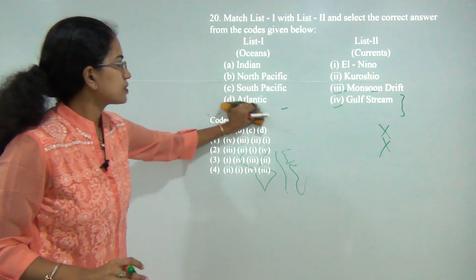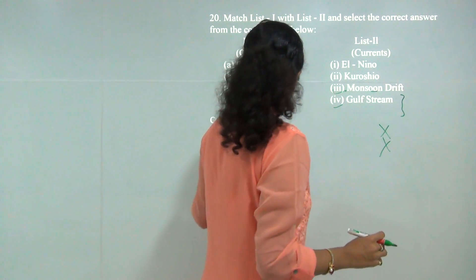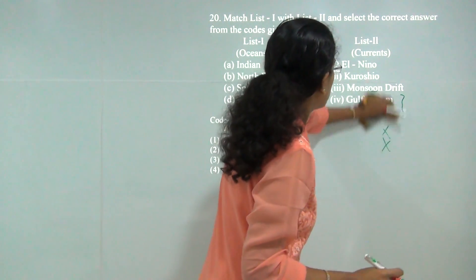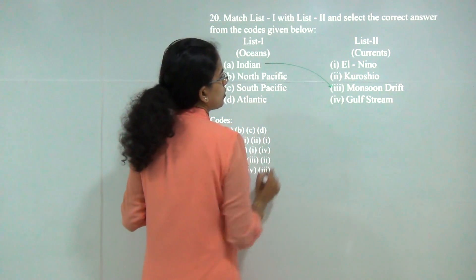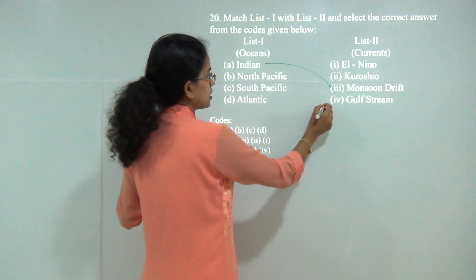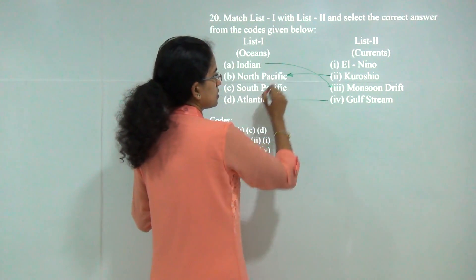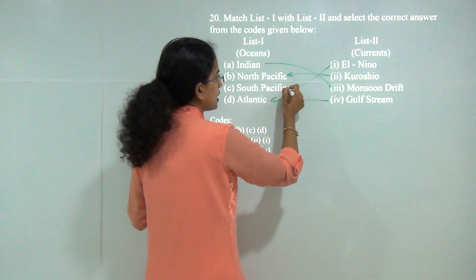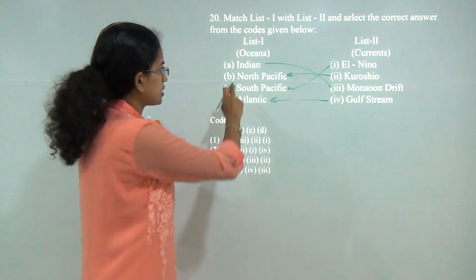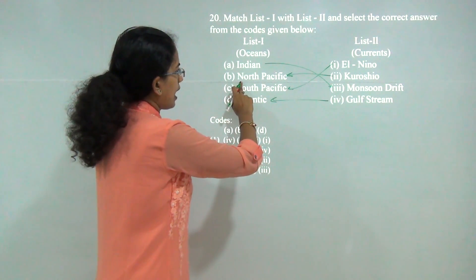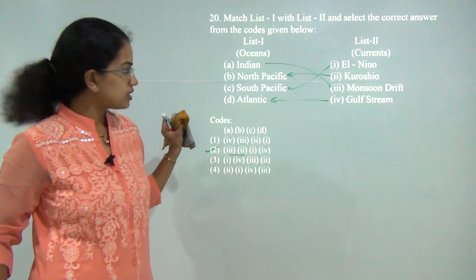Next question: match the currents with the oceans. Monsoon drift is a common phenomenon of the Indian Ocean. Gulf Stream originates in the North Atlantic. Kuroshio Current originates in the North Pacific. And El Niño is characteristic of the South Pacific. So those are the correct matches — A with 3 and B with 2 — making 2 the correct answer.